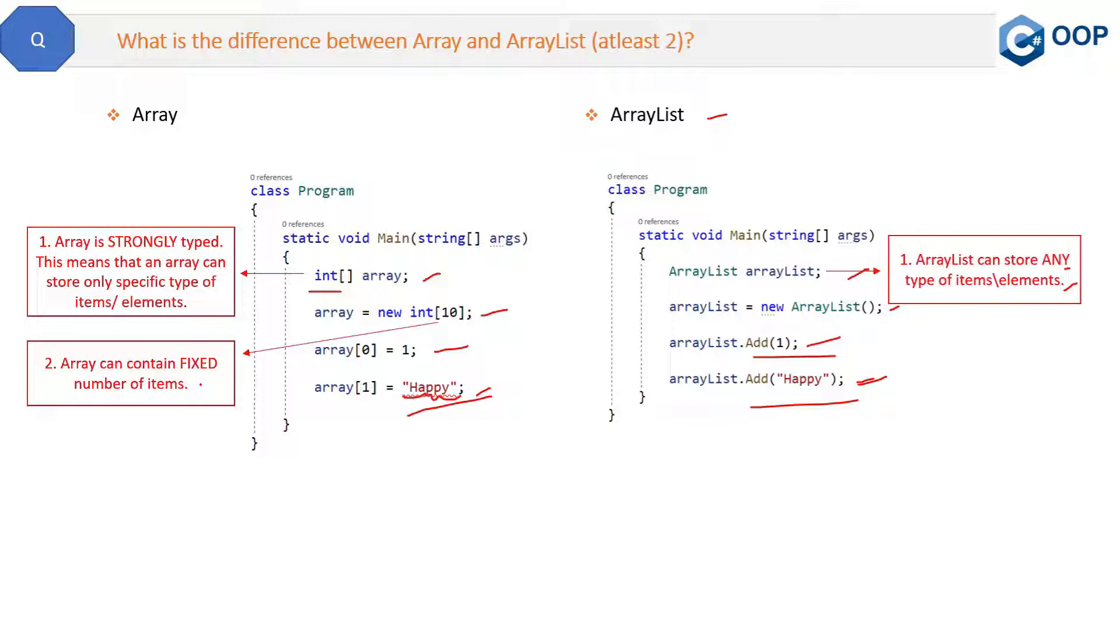Now the next difference is array can contain fixed number of items. See here, we have to give the number of items in array in advance. Here it is 10. If we will not give the number here, then it will show a compile time error. So you have to give the number in advance for the array that how many items you are going to add in the array.